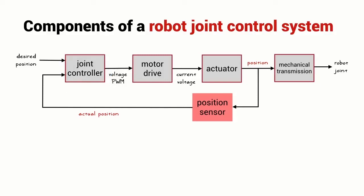The output of the joint controller is typically some electronic signal—it might be a voltage or a pulse width modulated waveform. This is input to the motor drive, which is power electronics that controls the current or voltage applied to the actuator.